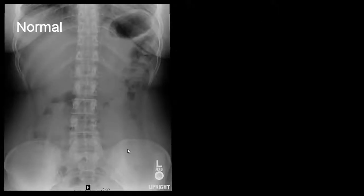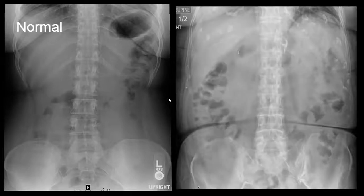This is an example of a normal abdominal radiograph. We look at air, bone, soft tissue — and this is an example of normal.